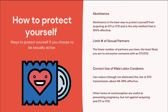So how can we protect ourselves? If you choose to be sexually active, there are ways you can protect yourself from getting an STI or STD and also from pregnancy. The number one best way to protect yourself is abstinence — not participating in any type of sexual activity. That is the only way you can 100% protect yourself. If you choose to engage in sexual activity, it's important that you limit your number of sexual partners, because the fewer partners you have, the less likely you are to encounter someone who has an STI.